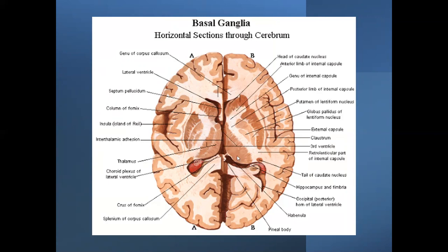To review: the head of the caudate nucleus, thalamus, anterior limb of the internal capsule, genu, posterior limb, putamen, and globus pallidus — these two together form the lentiform nucleus. Lateral to the putamen you can see the external capsule, then the claustrum, and lateral to the claustrum is the insula, known as the fifth lobe of the brain.